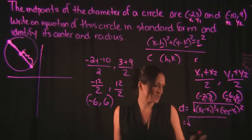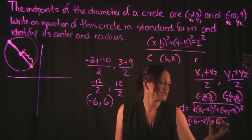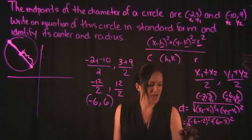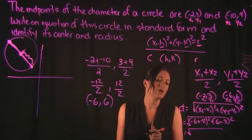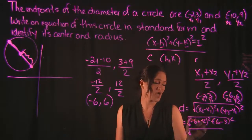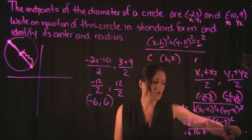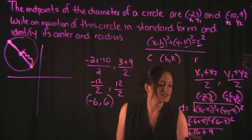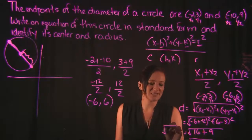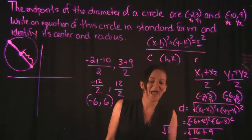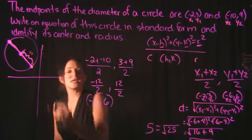Plugging in: x2 minus x1 is negative 6 minus negative 2, which by the double negative rule gives negative 4. Squaring that: negative 4 times negative 4 is 16. Then y2 minus y1 is 6 minus 3, which is 3. Squaring that gives 9. Adding 16 plus 9 gives 25. The square root of 25 equals 5, so the radius is 5.